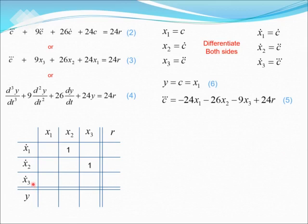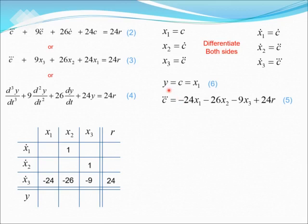For x3 prime equal to c triple prime, where c triple prime equals the equation from before, we put minus 24, minus 26, minus 9, and plus 24 in this row respectively. For y equals to x1, we put a 1 under column x1 for y. For the rest of the boxes, we put 0.